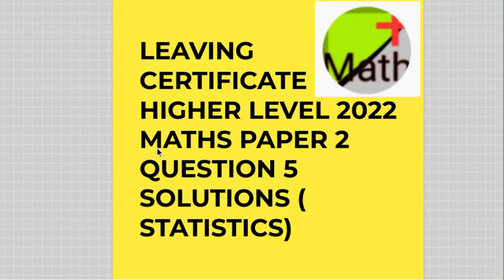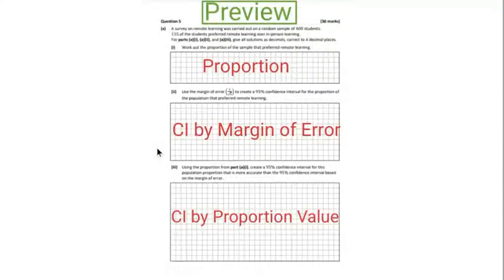Let's start off now with the first part A. We can see there that we have a random sample of 400 students, 135 of the students preferred remote learning, and we need to find first of all the proportion. So we just use the fraction.